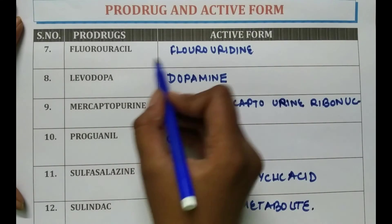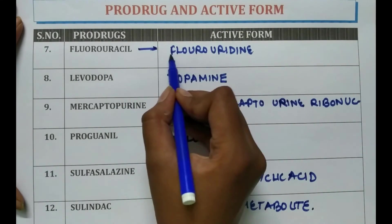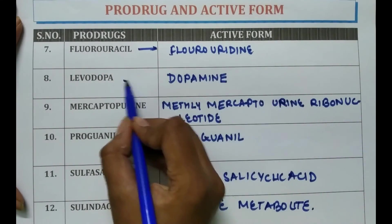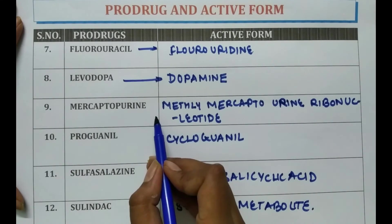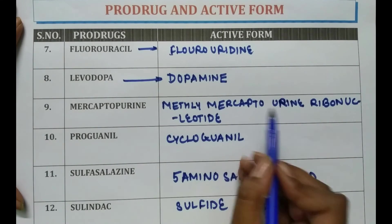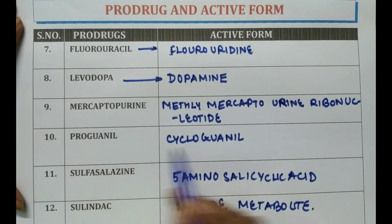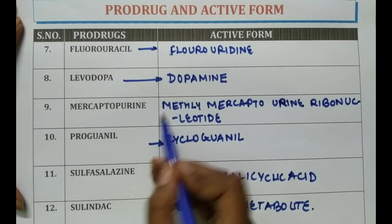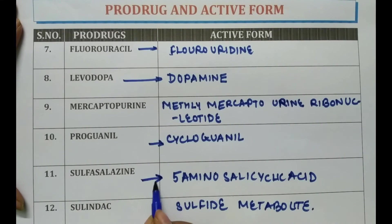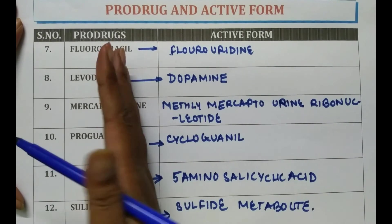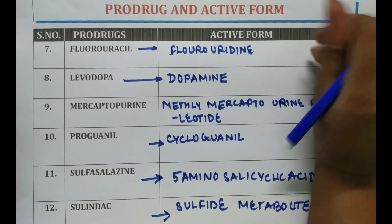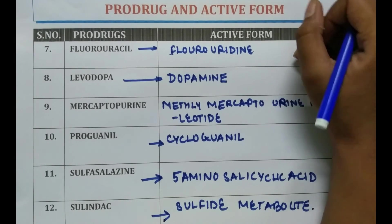To summarize: Fluorouracil is converted into fluorouridine. Levodopa to dopamine, mercaptopurine to methylmercaptopurine ribonucleotide. Proguanil to cycloguanil, and sulfasalazine to 5-aminosalicylic acid. Sulindac to sulfide metabolites. That's all about the prodrugs and their active metabolites. Thank you for watching this video. Have a good day.